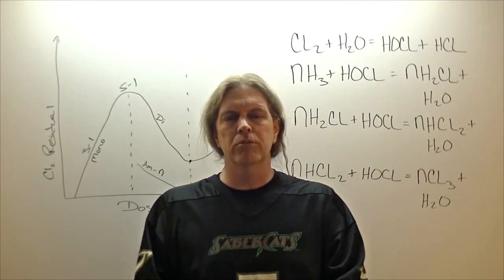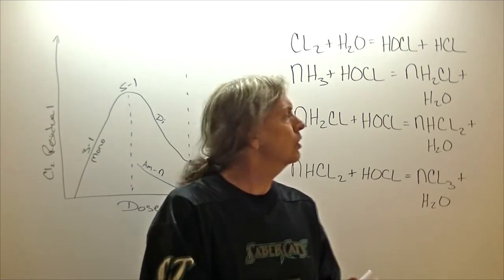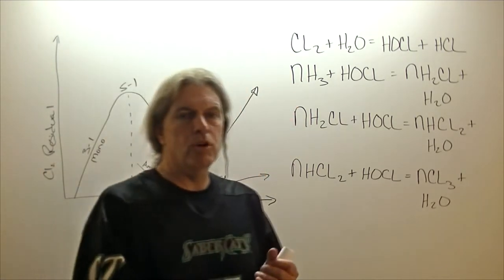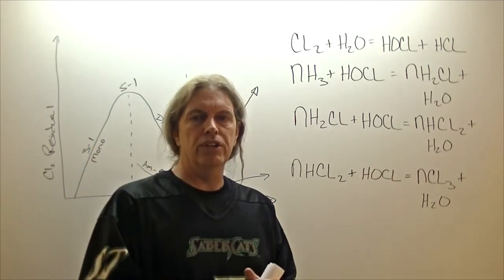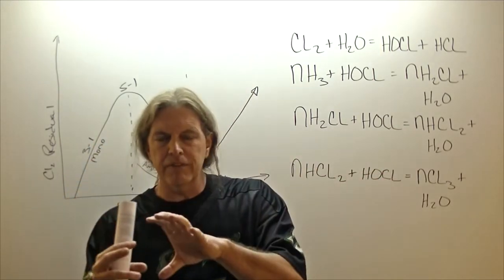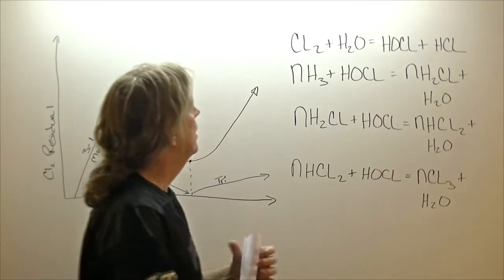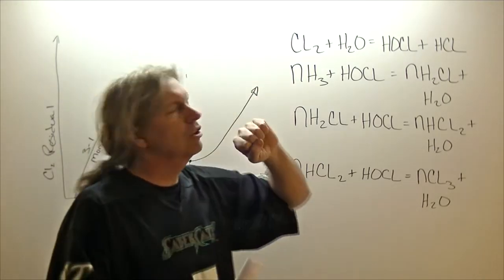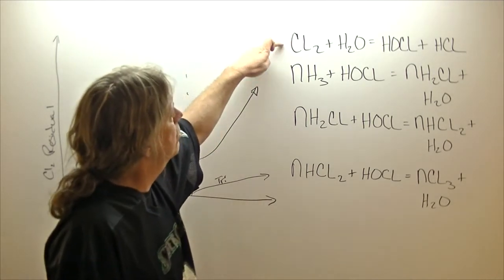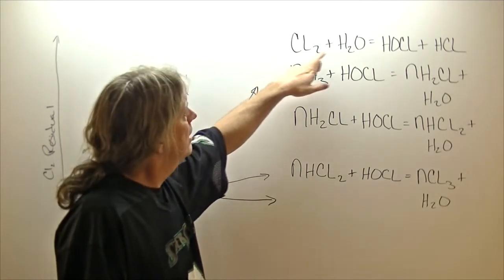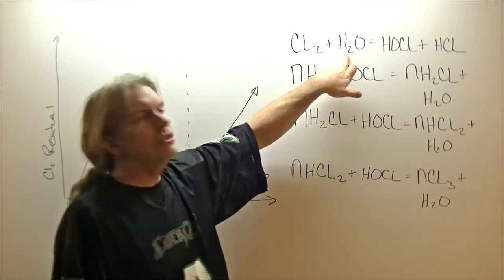Now, how do we form chloramines and how do they work? Chloramines are formed by basically taking chlorine and adding ammonia to it. But let's take a step back first before we get to that point and talk about what happens when you add chlorine to water.